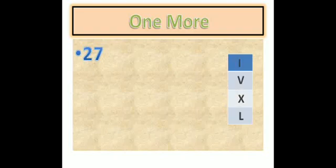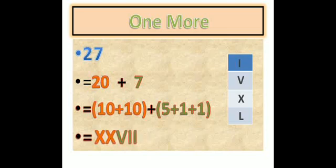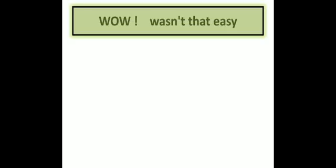One more example: 27. Write all 4 symbols on the right of your notebook. Now split 27 into tens and ones: 20 plus 7. For 20 the combination is 10 plus 10, and for 7 it is 5 plus 1 plus 1 plus 1. For 10 it is X, then the next X is written to its right since we are adding, giving XX. Then V is written to the right, and each I to the right of V. So the symbol for 27 is XXVII. Wasn't that easy?